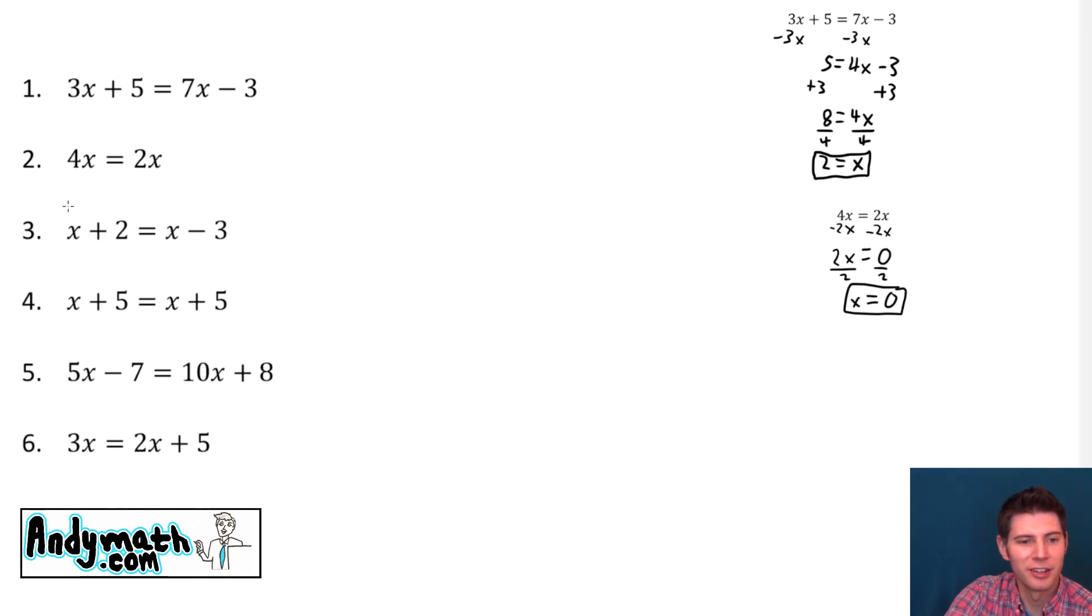Move that one out of the way, and next we'll do this one. x plus 2 equals x minus 3. First, let's get the x's. They match, so we're just going to do minus x minus x. These cancel and these cancel, which gives us 2 equals negative 3. That is impossible. 2 cannot equal negative 3, so this is no solution.